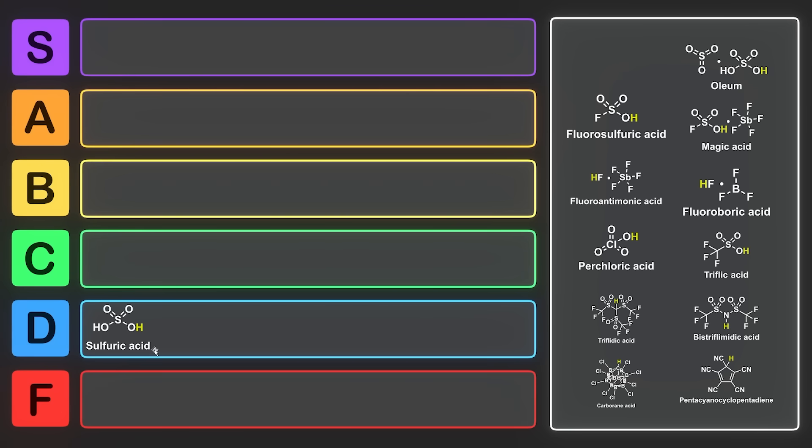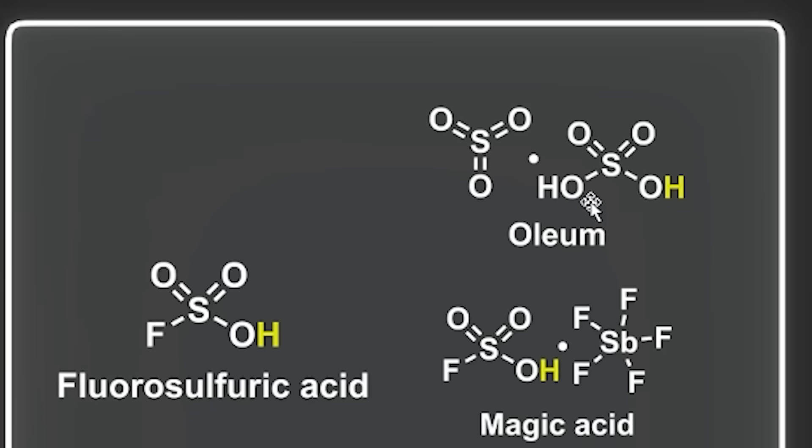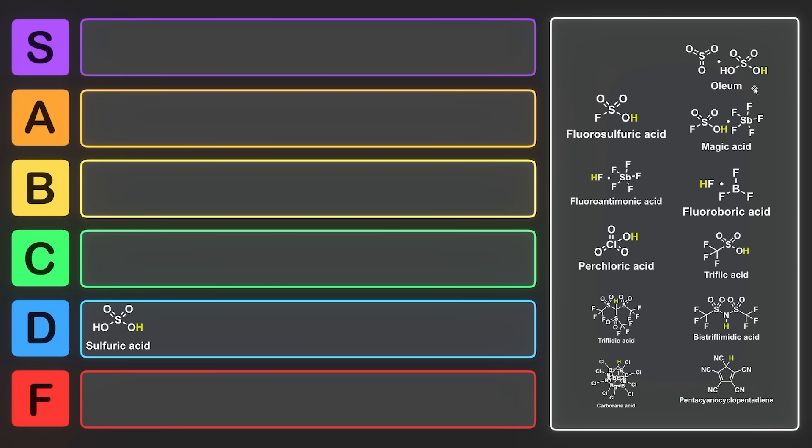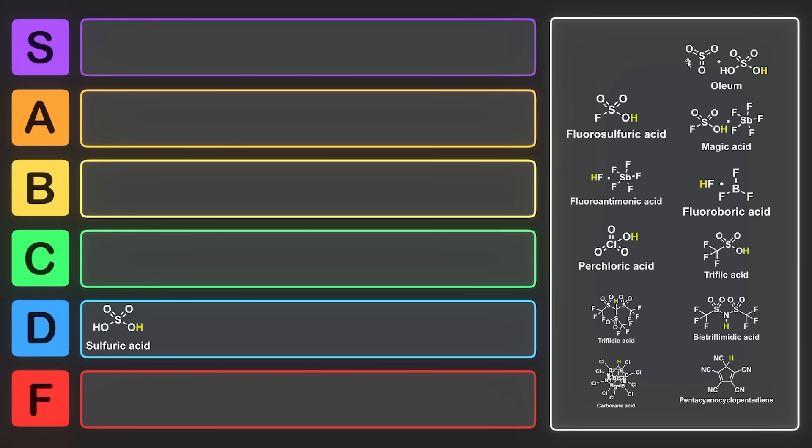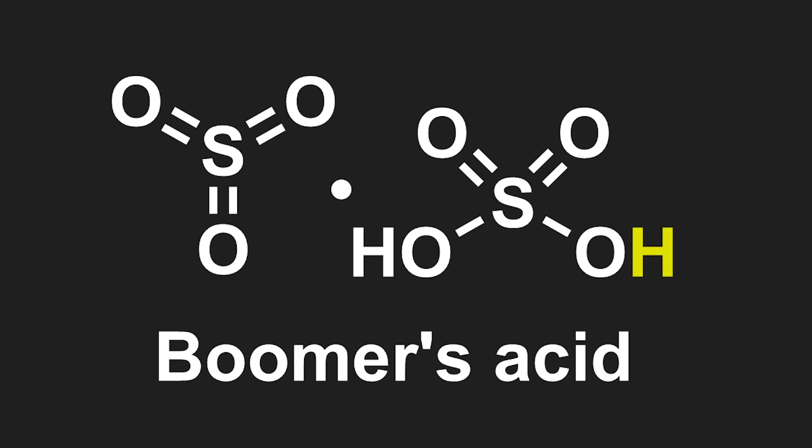One of the things you can do to sulfuric acid is mix it with sulfur trioxide, and that makes what's known as oleum. Oleum also can be referred to as fuming sulfuric acid, as when you open it, it fumes. It doesn't fume as much as pure sulfur trioxide, which is absolutely terrifying. It instantly turns black because it's forming pyrosulfuric acid. You usually only see oleum used in these really old syntheses that really old chemists used to do, and for that reason, I think we can start calling oleum boomer's acid.